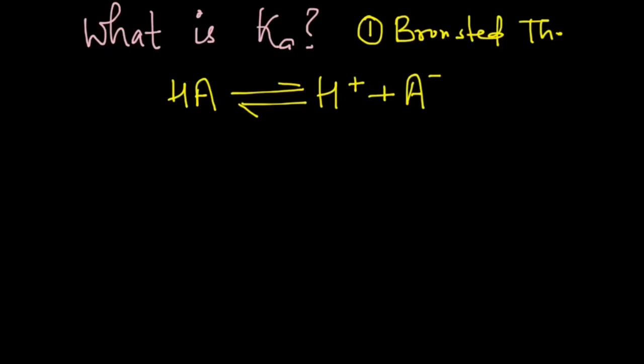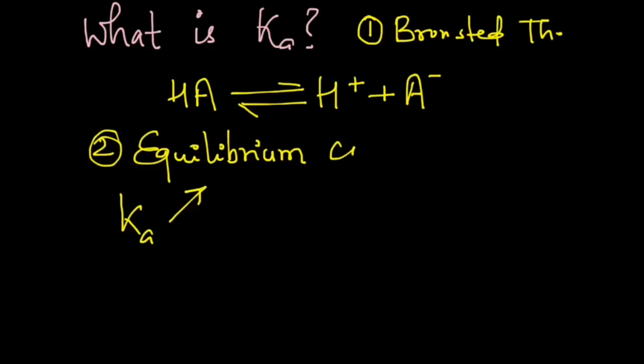And the second concept that we are going to use is from equilibrium. Which states that for any reaction we have an equilibrium constant. So Ka is nothing but the equilibrium constant for dissociation of an acid.